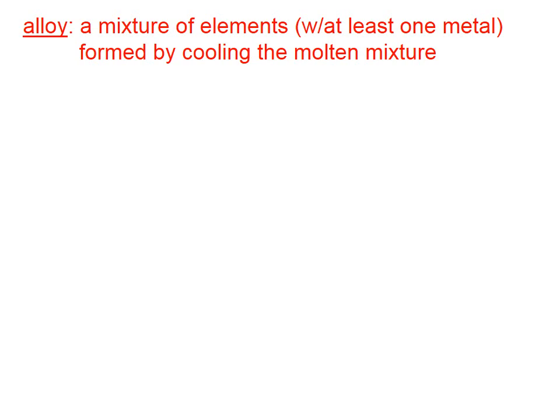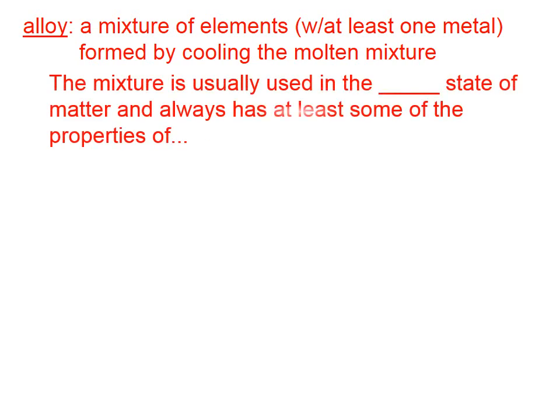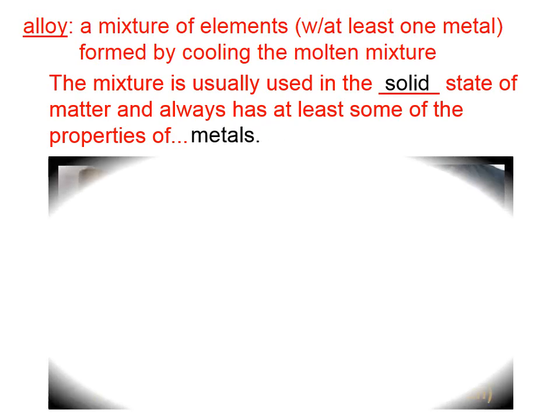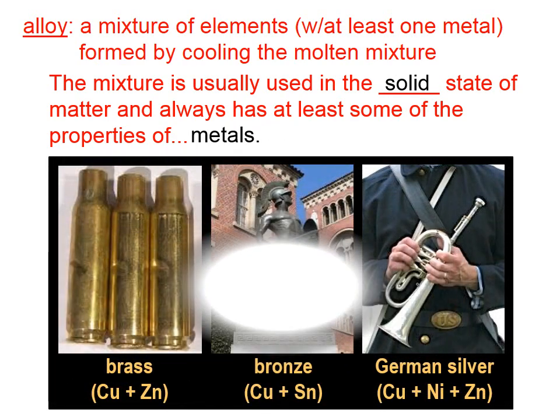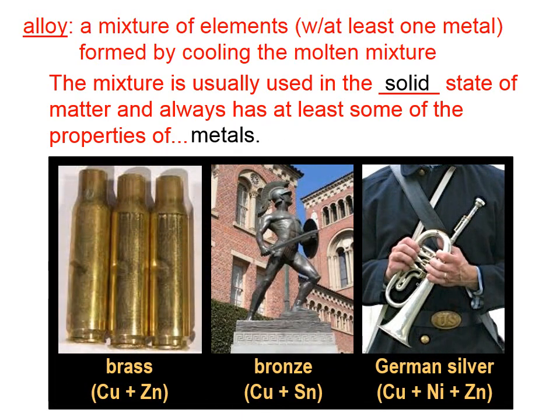An alloy is a mixture of elements with at least one metal, formed by cooling the molten mixture. The mixture is usually used in the solid state of matter and always has at least some of the properties of metals.